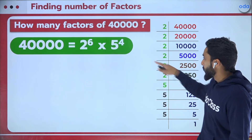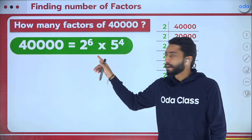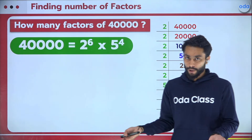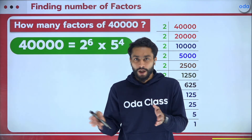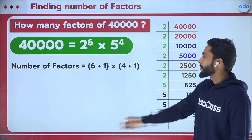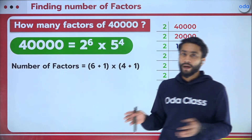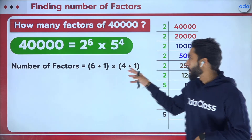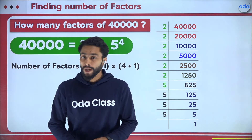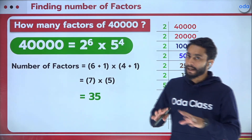For 40,000: 40,000÷2=20,000, and continuing gives 2^6 × 5^4 — just one more power of 2 compared to 20,000. Successors: (6+1) × (4+1) = 7 × 5 = 35. So 40,000 has 35 unique factors. Such a huge number, yet we found its factor count so quickly!